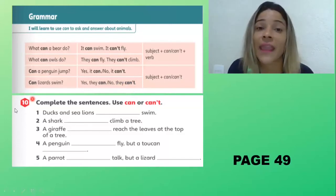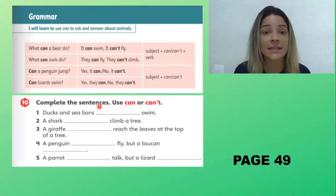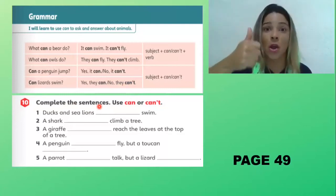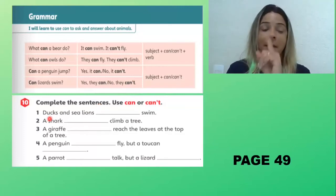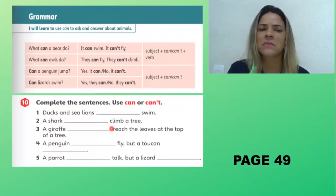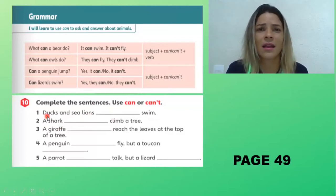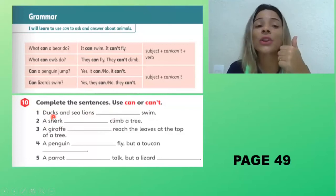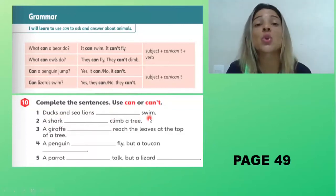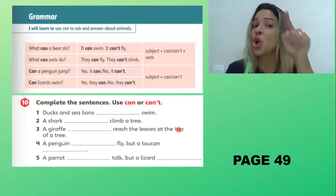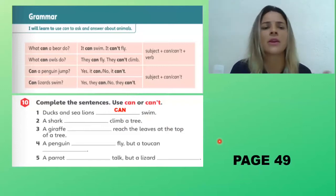Let's go to activity 10: complete the sentence, use 'can' or 'can't.' Atividade 10 — complete as frases, use 'can' (affirmative — pode) or 'can't' (negative — não pode, não consegue). Number one: ducks and sea lions — can or can't swim? O que é 'duck'? Pato. Patos e leões marinhos podem nadar? Now it's your turn. The answer: 'can.' Patos e leões marinhos podem nadar.